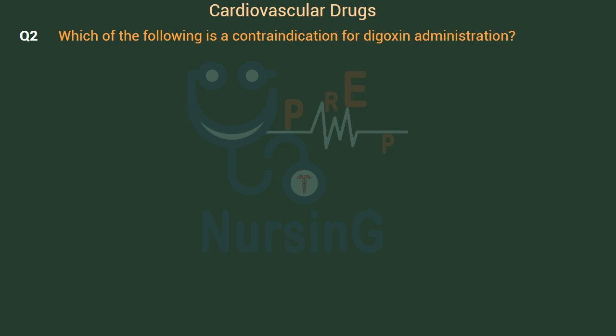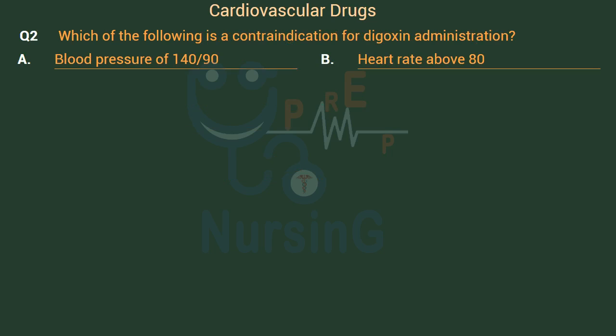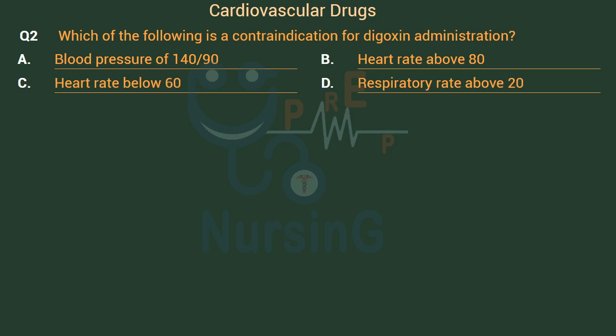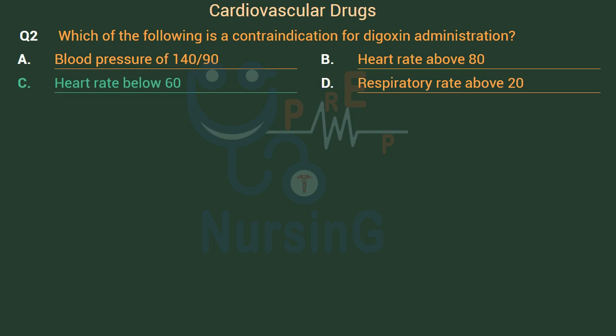Which of the following is a contraindication for digoxin administration? Option A: Blood pressure of 140/90. Option B: Heart rate above 80. Option C: Heart rate below 60. Option D: Respiratory rate above 20. The right answer is Option C: Heart rate below 60.